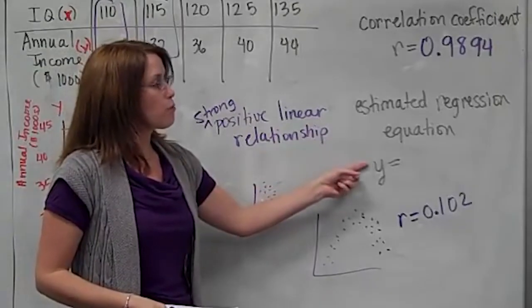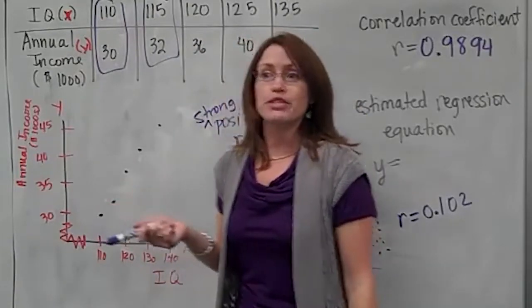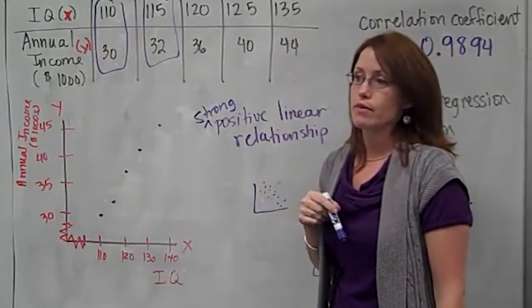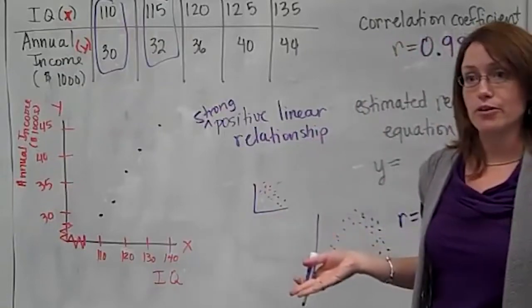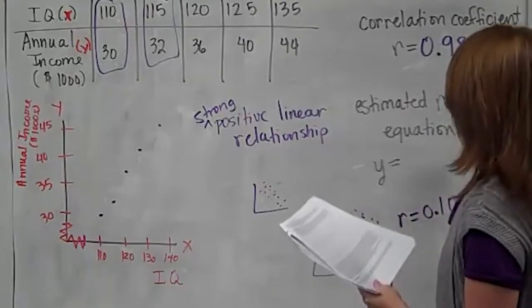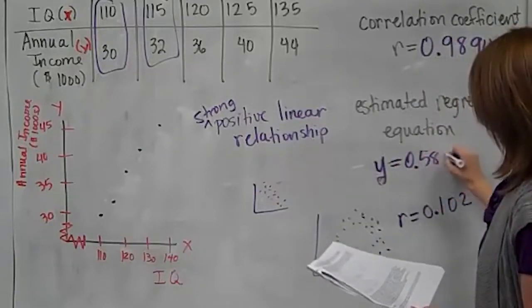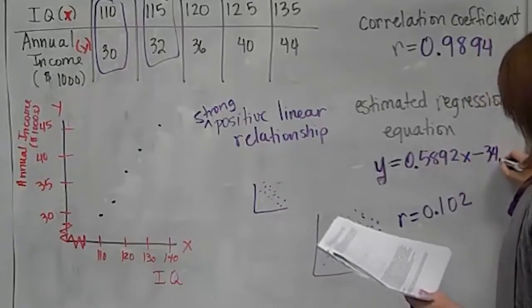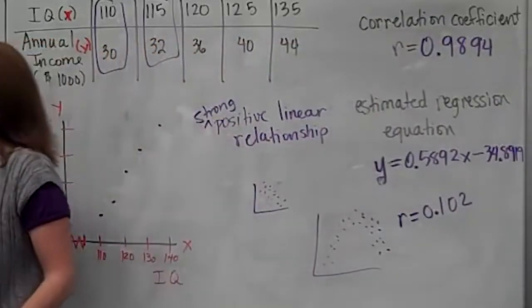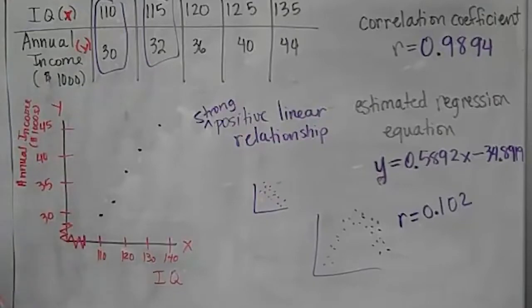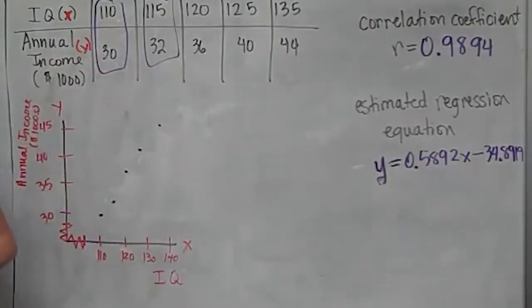The whole point of doing all this is so that you can say, well, guess what? If you're a person who has an IQ of, let's say, 130, what could I predict your annual income to be? 42,000. Well, you can guess, and I don't know if it's exactly 42,000, but you can guess and try to figure it out. Or you can use what's called the regression equation. This is something that you do not have to calculate. However, I'm going to tell you what it is. Y is going to equal some decimals, 0.5892 times x minus 34.8919.